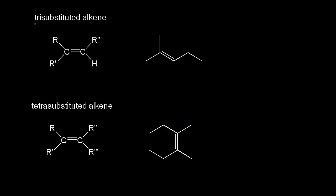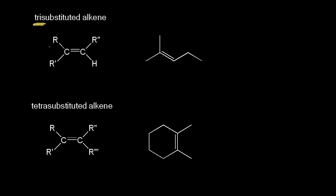Now let's look at a trisubstituted alkene — three R groups: R, R prime, and R double prime, which may be the same or different. Here's an example of a trisubstituted alkene. Drawing in the hydrogen on one carbon makes it easier to see that we have three R groups bonded to the double bond.